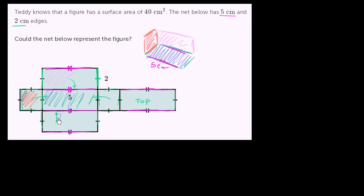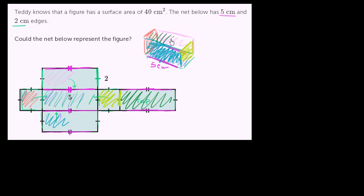When we fold this side in, that's the side facing us a little bit - that's that right over there. When we fold this side in, that would be that side. Then we fold the top, which is connected right here, on top of our rectangular prism. So the figure is 5 centimeters in this dimension, 2 centimeters tall, and 2 centimeters wide.